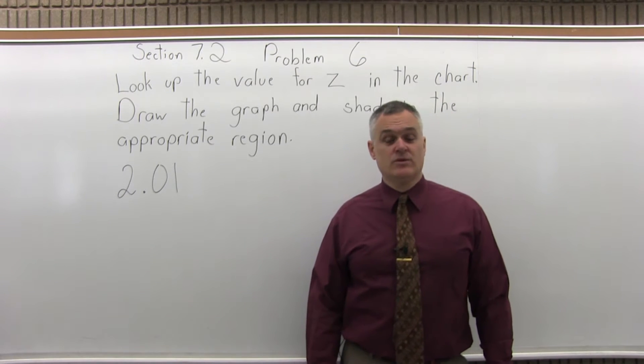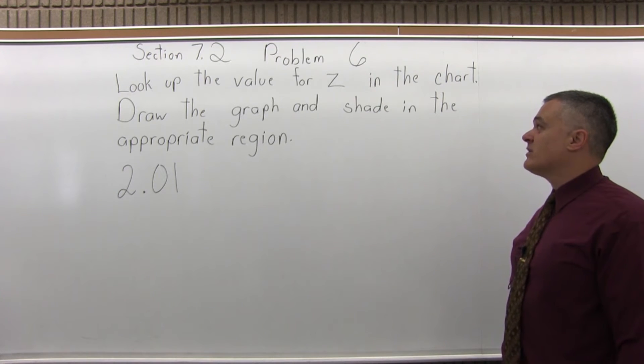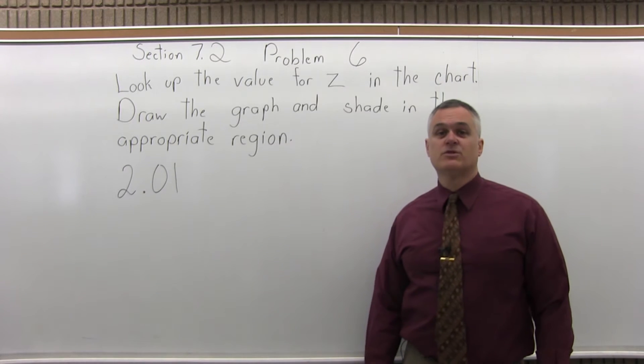This is Section 7.2, Problem number 6. It says look up the value for z in the chart and draw the graph and shade in the appropriate region. And the value we want to look up for this problem is 2.01.